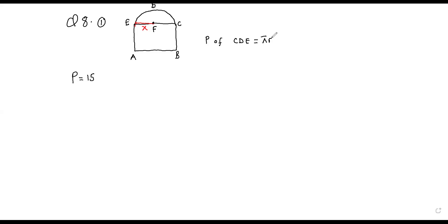So we have πr. Now the perimeter of the whole thing: EF is x, meaning that EC and the top of the rectangle, AB, are equal. Since we have x as the radius, half the width, the whole width is 2x. So these two sides, AB and EC, will each be 2x.